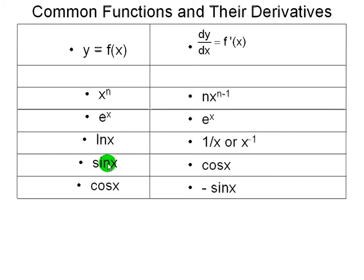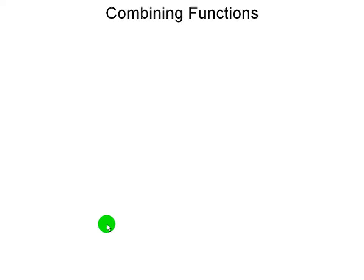Sine and cosine have an interesting relationship: the derivative of sine is cosine, and the derivative of cosine is negative sine. These basic functions can be combined together to make more complicated functions, and on the next couple of pages I'm going to show a few basic rules for dealing with compound functions — starting with what we do when we add or subtract two functions.